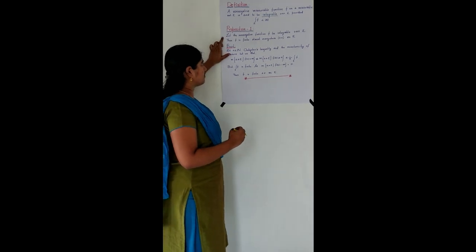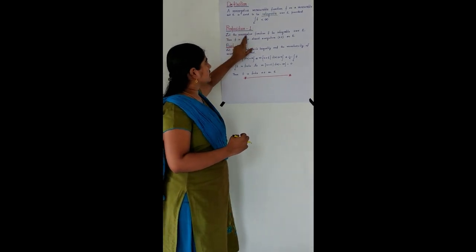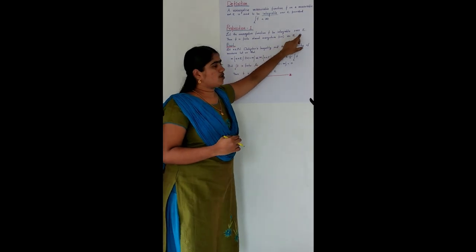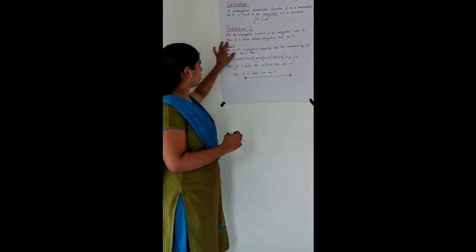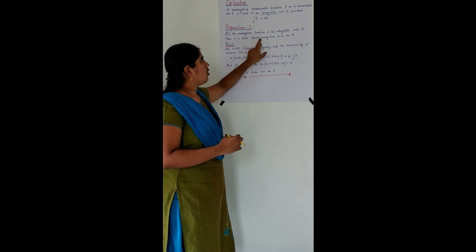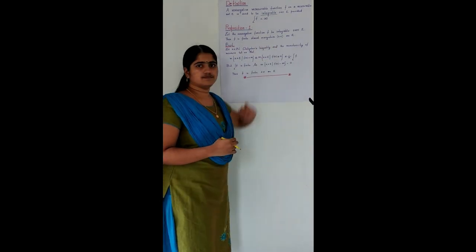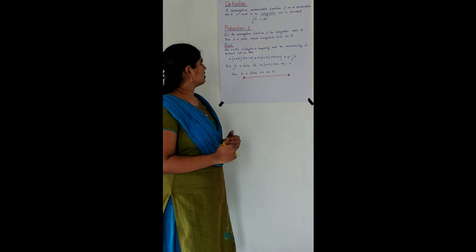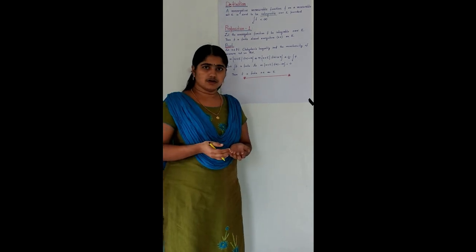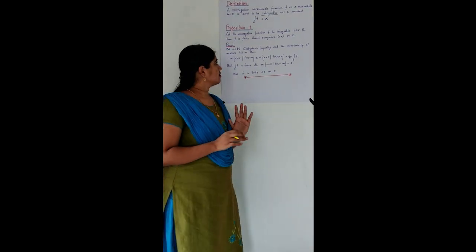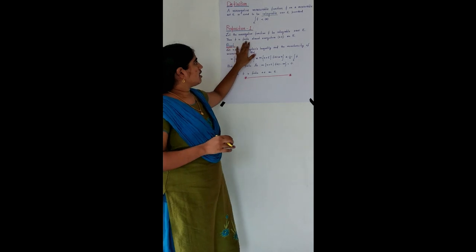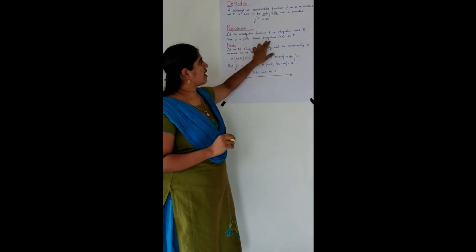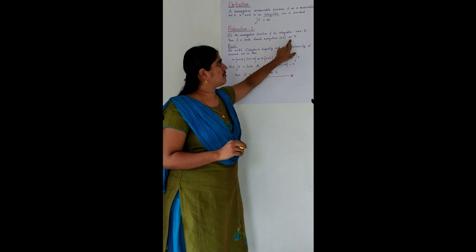Let us look into a proposition. The proposition says that let the non-negative function F be integrable over E. Then F is finite almost everywhere on E. That is, we are given a non-negative function which is integrable over E, and we need to prove that F is finite almost everywhere on E.